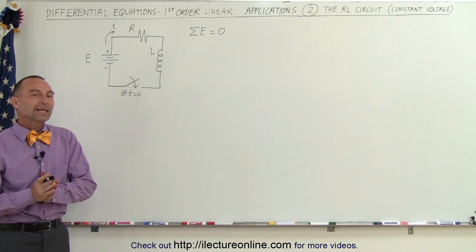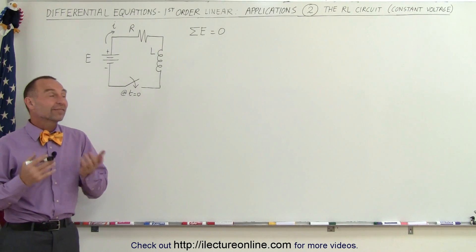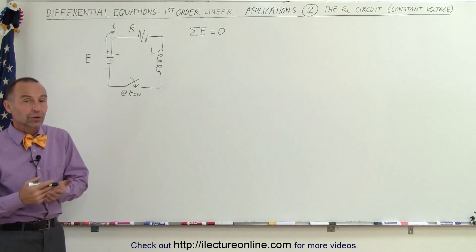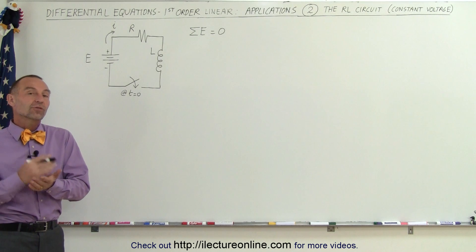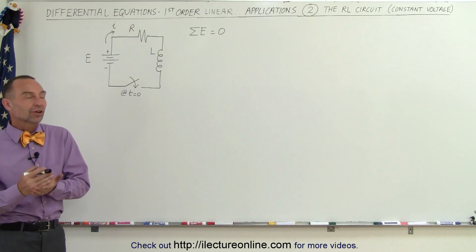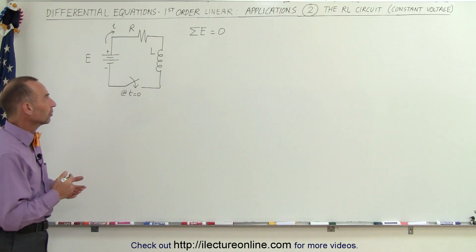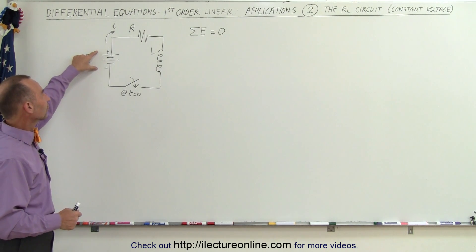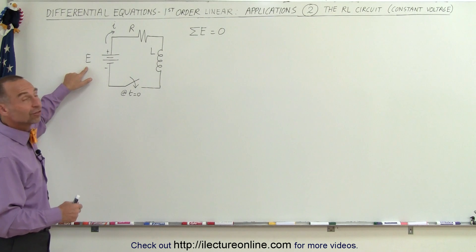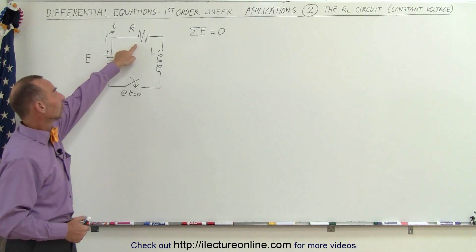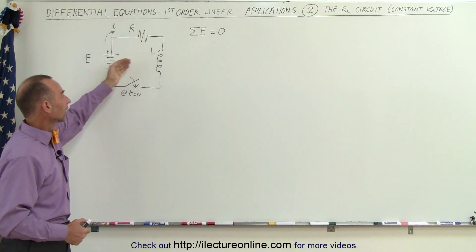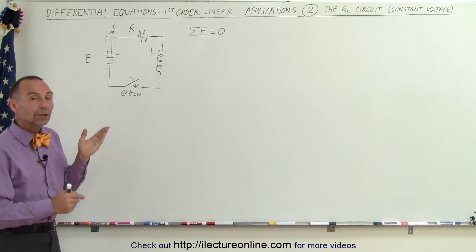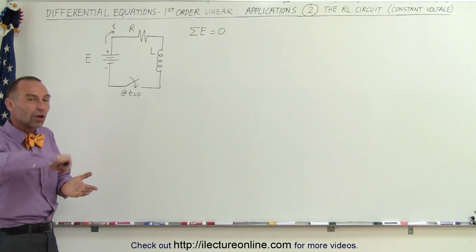Welcome to ElectronLine. Here we're going to do an example of the RL circuit. R stands for resistance and L stands for inductance. We have a voltage supply which gives us a steady state voltage, a resistor, an inductor, and a switch. At time equals zero we close the switch,